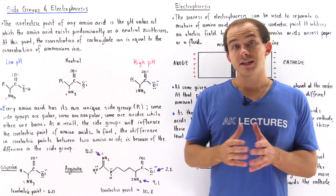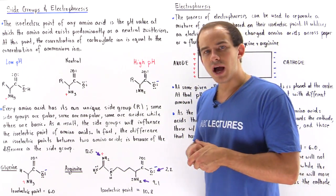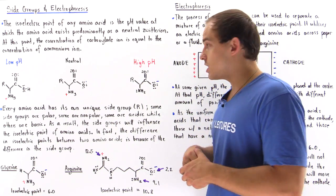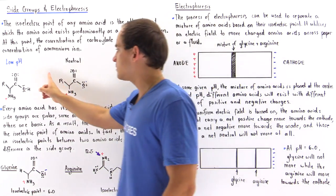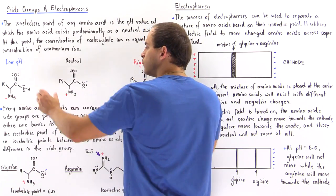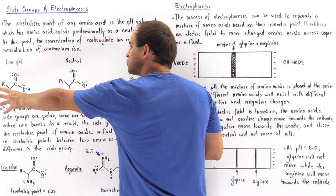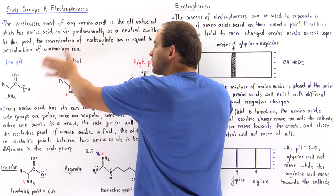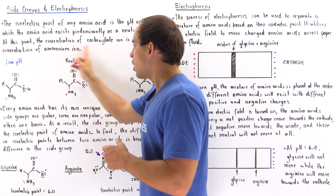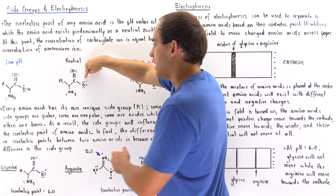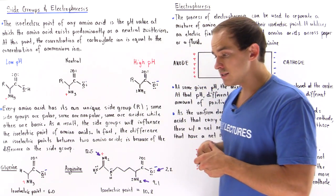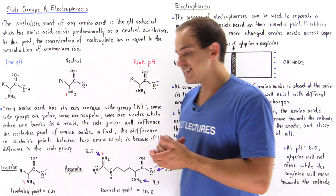The isoelectric point of any amino acid is the pH value at which that amino acid exists predominantly in the zwitterion form. Basically at the isoelectric point, the concentration of the carboxylate ion is equal to the concentration of the ammonium ion. So if the concentration of these two forms is equal, we have a negative charge and a positive charge — because they are equal, they cancel out, and so the overall net charge of our amino acid at the isoelectric point will be zero. So at the isoelectric point for any specific amino acid, that amino acid will have a net charge of zero.